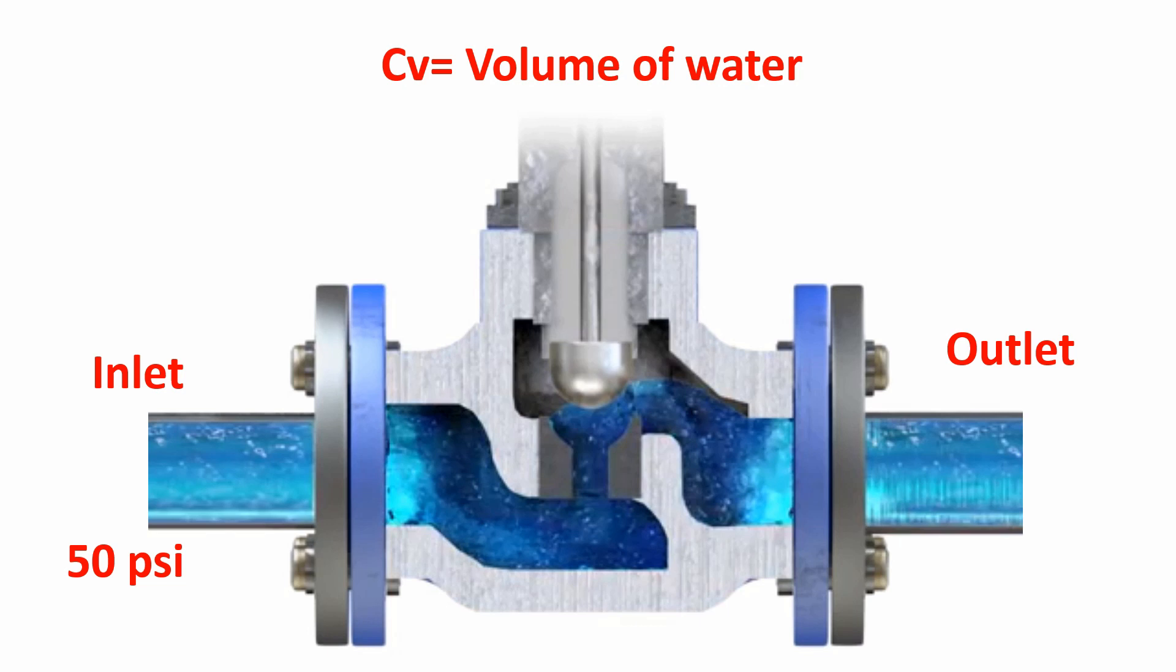And basically what is Cv? It is nothing but the volume of water. So what is the volume of water that a control valve body can accommodate? In this slide you could see there is a process fluid getting into the inlet of the valve body with 50 psi pressure.